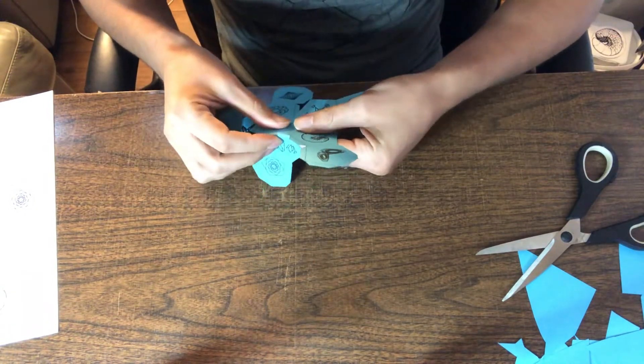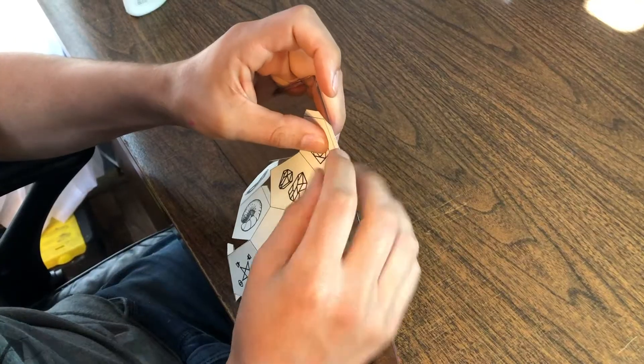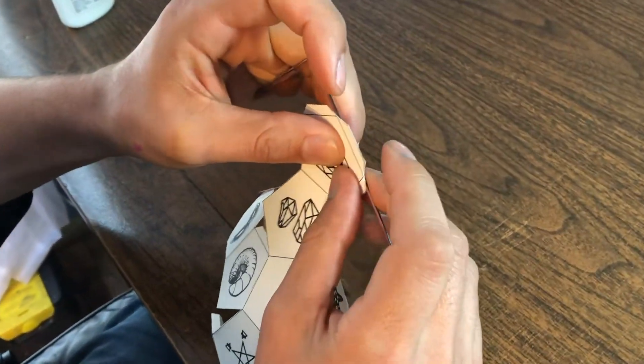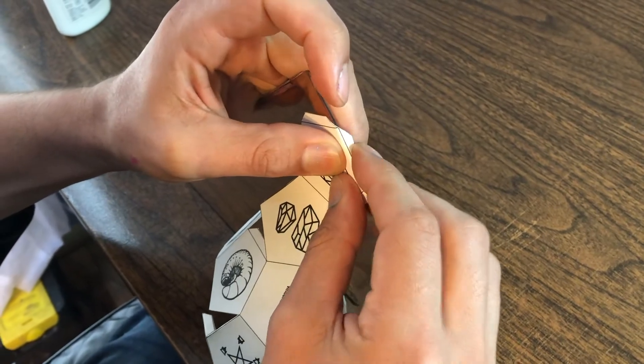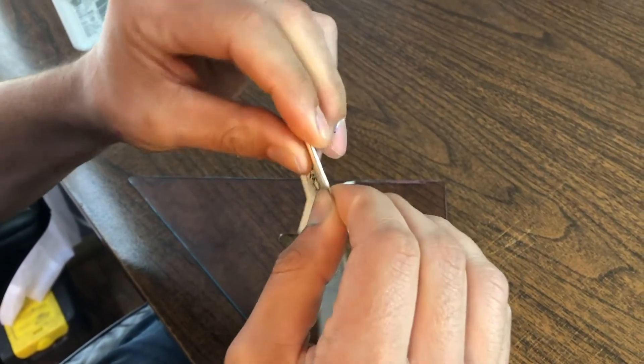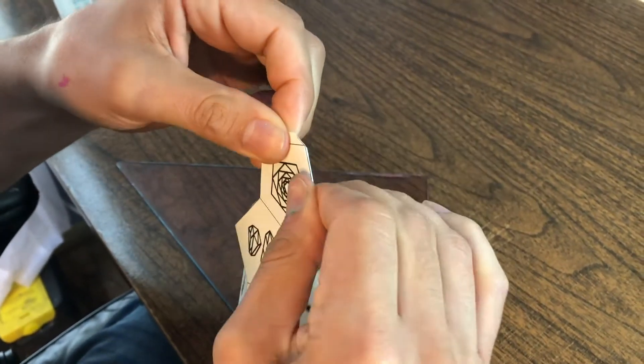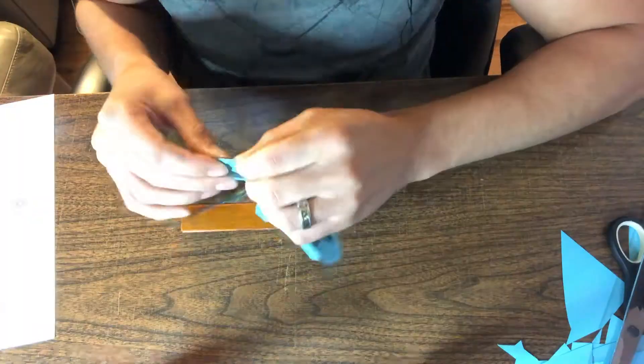And you can use a hard edge, something like a ruler, so you can get a perfect straight line crease. Just line it up to the perforation and press down against it, so you can get a nice straight fold on each edge.